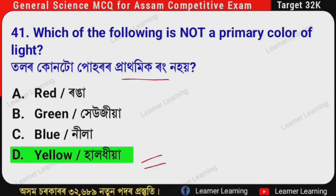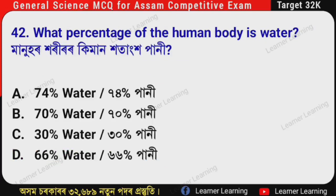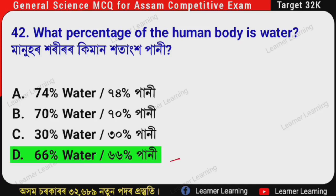Remember this. Next question: What percentage of the human body is water? The correct option is Option D — 66%. The human body is approximately 66% water.